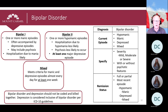Bipolar 2 disorder is characterized by a minimum of one hypomanic episode and one major depressive symptom. The main difference between bipolar 1 and bipolar 2 is the severity of the manic episodes. Patients diagnosed with bipolar 1 will experience a full manic episode, while a patient with bipolar 2 will experience only hypomania. Hypomania is a less severe form of mania, lasting at least four days but not severe enough to affect social features and not requiring hospitalization. Mania lasts for at least a week, causes severe impact on social features, and could require hospitalization.